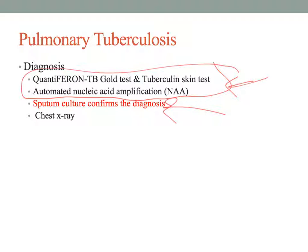If someone has a positive TB skin test—showing redness and a small area of edema at the injection site—it means they are reacting to the tuberculin placed in the intradermal injection. This indicates only exposure. If positive, further testing is done to determine whether it is active TB.